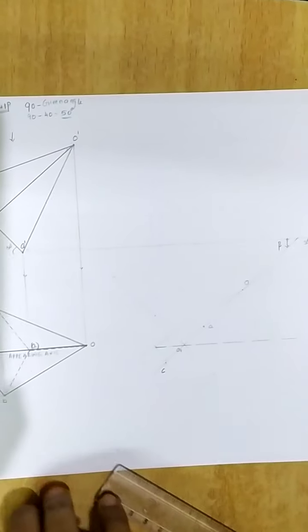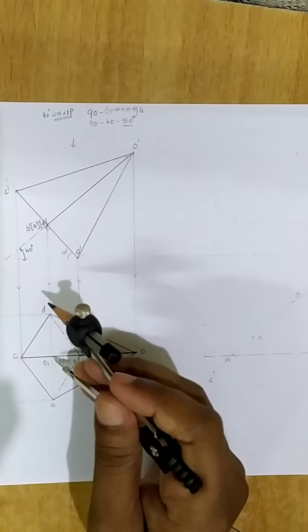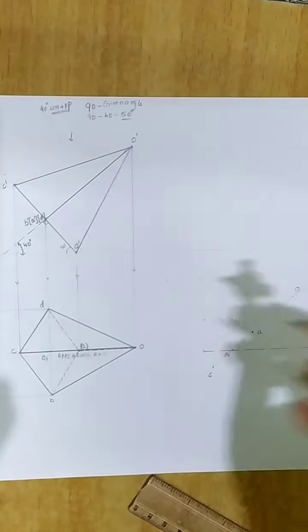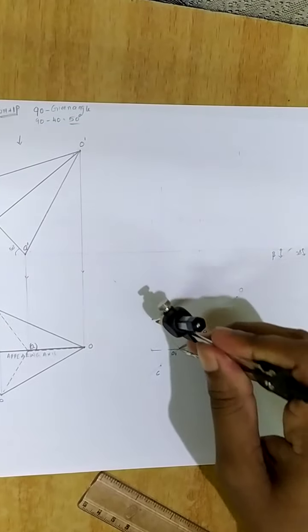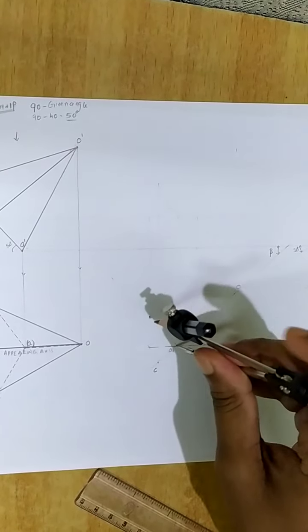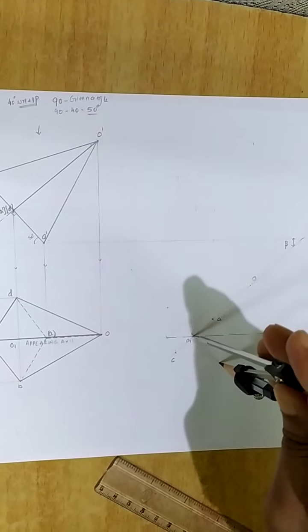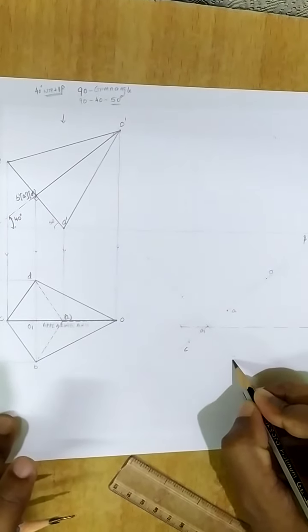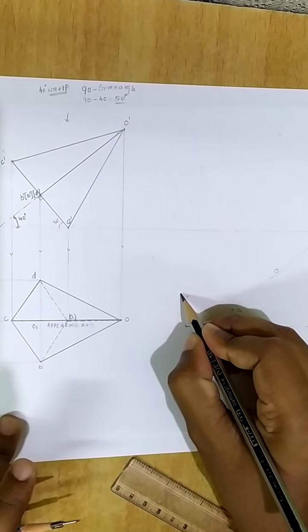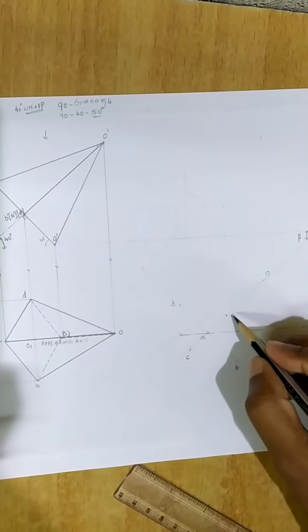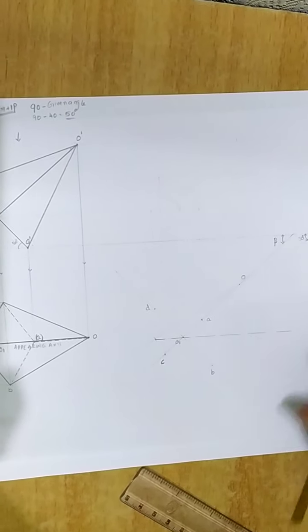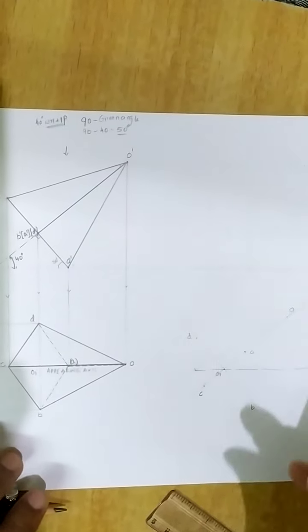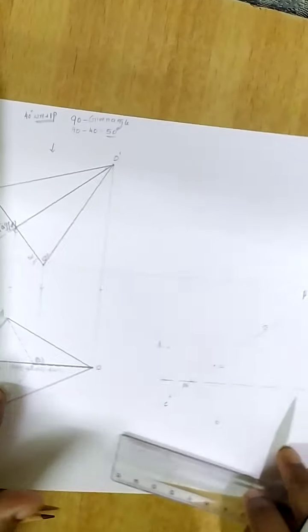On this vertical line I will be having the points B as well as D. Take the distance O1 to D, place at O1 and cut an arc to obtain point D. With the same distance, cut the arc below to get point B. Once again check that all the namings must be in cyclic order. I have got all the namings in the cyclic order.